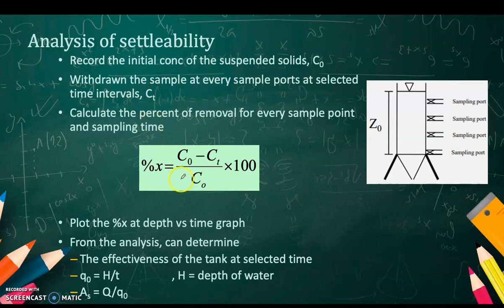You withdraw the sample at every sampling part at time intervals C_t, and calculate the percentage of removal using this formula. This formula is shown in the textbook and is a typical formula for removal.